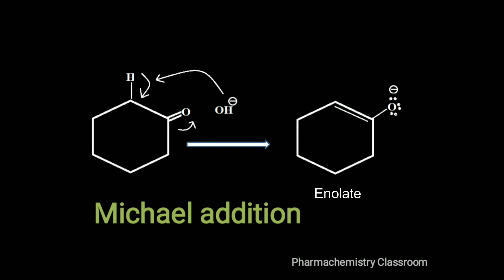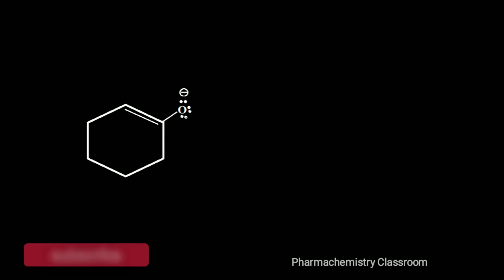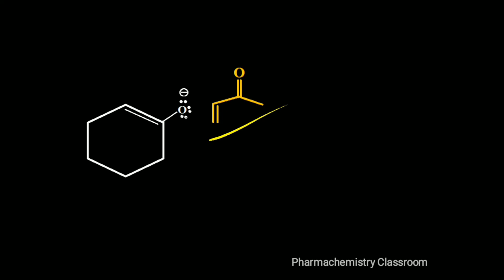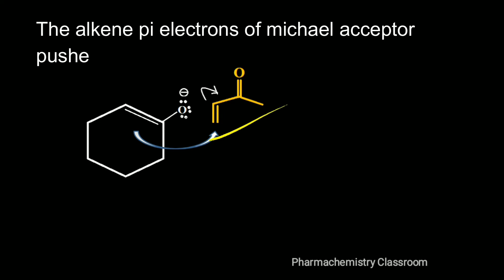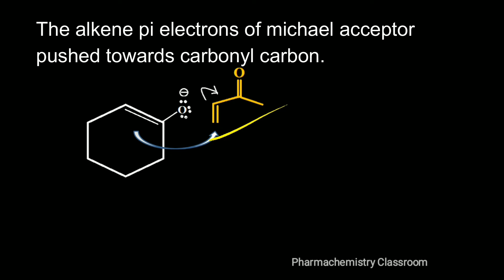Here we are getting the enolate — the Michael donor. In the second step, the formed enolate (the Michael donor) reacts with the Michael acceptor, an alpha-beta unsaturated compound. Here I take methyl vinyl ketone as the Michael acceptor. In this step, the enolate adds to the Michael acceptor; the alkene pi electrons of the Michael acceptor push towards the carbonyl carbon.